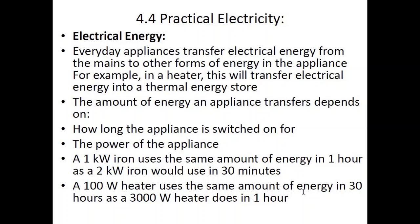Power is usually measured in kilowatt-hours. A 1 kilowatt iron uses the same amount of energy in 1 hour as a 2 kilowatt iron would use in 30 minutes, since they are inversely proportional. Similarly, a 100 watt heater uses the same amount of energy in 30 hours as a 3000 watt heater uses in 1 hour, because they are 30 times different in power.